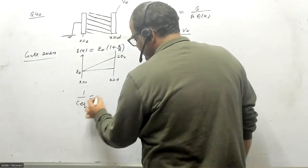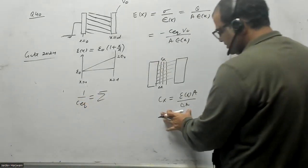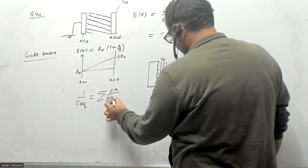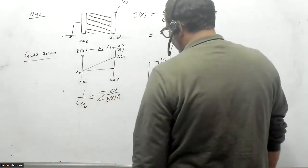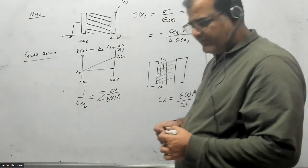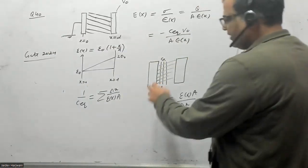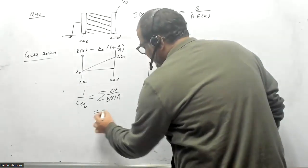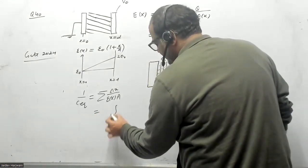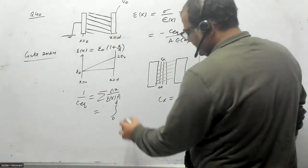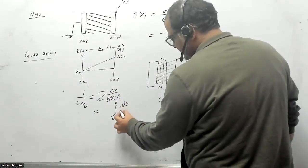C equivalent, 1 over C equivalent will be summation of this kind of capacitors, that is delta X divided by ε(X) times A. Because this delta X can be taken very small, I can replace this summation by integration.